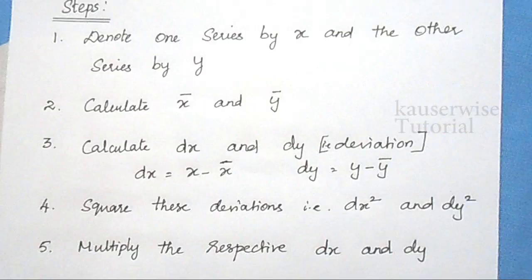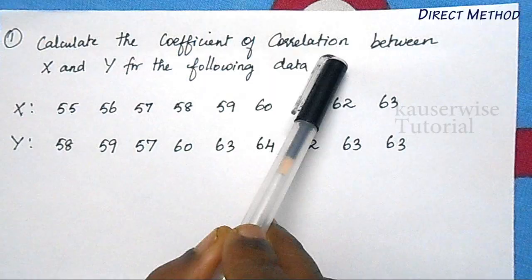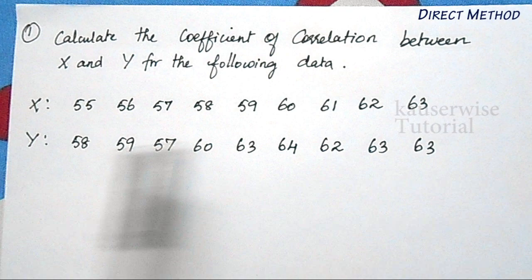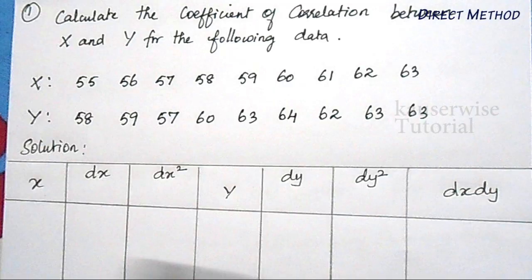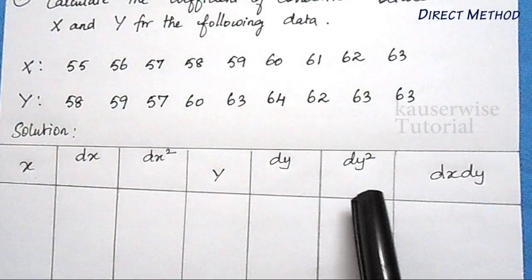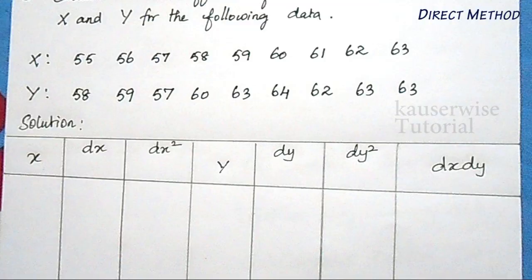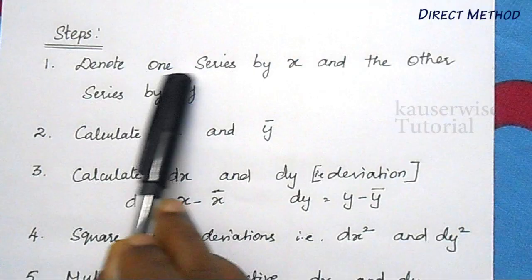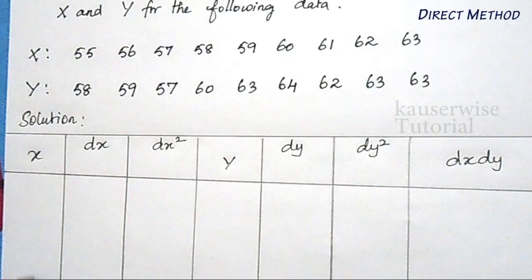Look at the first problem for the direct method: calculate the coefficient of correlation between x and y for the following data. The x series and y series are given. Now let us see the solution. The table format has columns: x, dx, dx², y, dy, dy², and dx·dy. In this column, list out the x series; here you need to list out the y series.